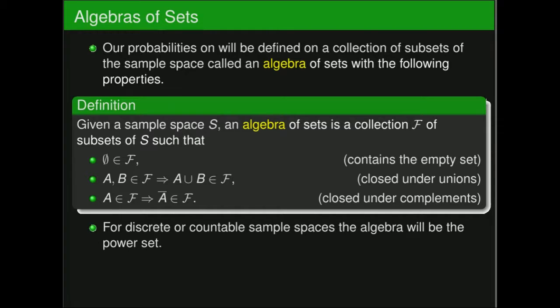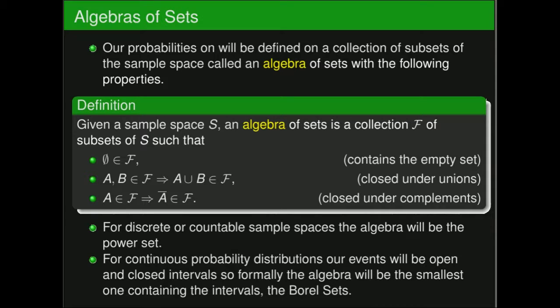For discrete or countable sample spaces, we always take our algebra to be the power set — the set of all possible subsets of the sample space. When we move into continuous distributions, our generating set will be the open and closed intervals, and formally our algebra will be called the collection of Borel sets. That may be a bit beyond the current scope — you'll encounter it more in real analysis or advanced calculus.